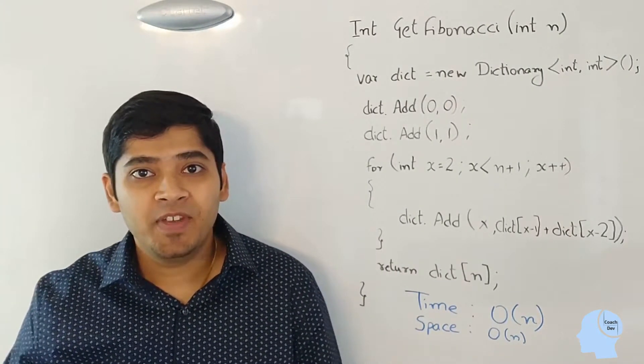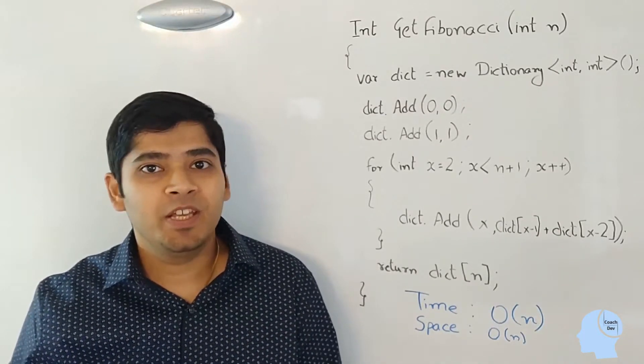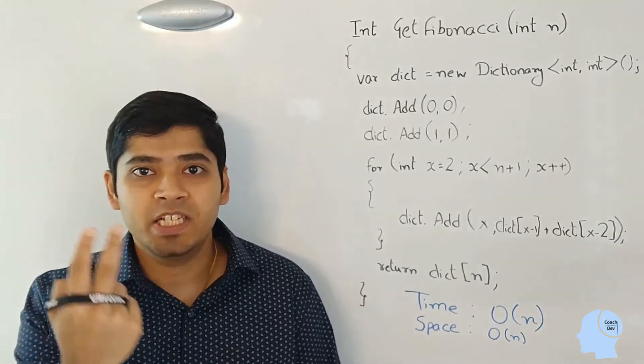With that solution in mind, we can reduce our space complexity from O of n to simply O of 1, which will just need two values.